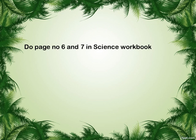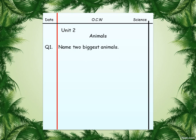This is your home task. You will solve pages 6 and 7 in your science workbook. And this is your written work. First of all, you have to draw a margin line, then mention the date, then the unit: animals. Then write question number 1: name two biggest animals. Question number 2: name and draw your favorite animal. I think that's enough for you.